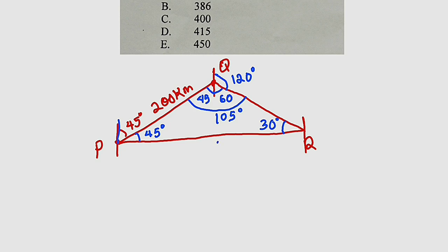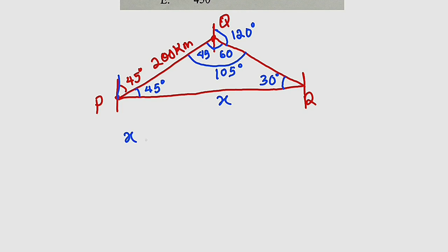We need to find this side length. Let me call it X. By using a sine rule, we have X, that is the side we are looking for, divide by the sine of that angle opposite to it, which is 105. Then this must be equal to, since we have the side length, we can use it. We have 200 divided by sine of 30.